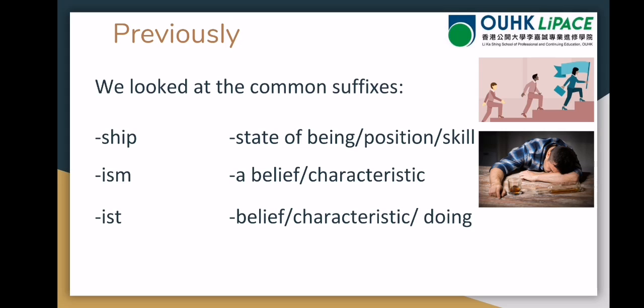Finally from last time, we looked at '-ist' (I-S-T), which has a very similar meaning to '-ism'. It can be a belief such as 'capitalist' or 'communist', a characteristic such as 'elitist' — a person who thinks they're better than others because they're rich or from a famous family — or a doing word, such as 'cyclist' or 'guitarist'. Just remember there are exceptions to the rule, as always with English.